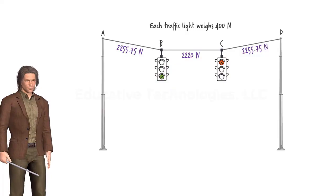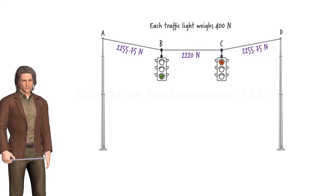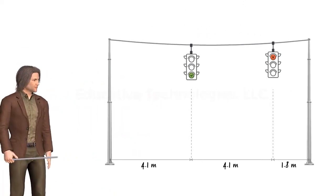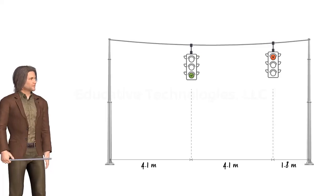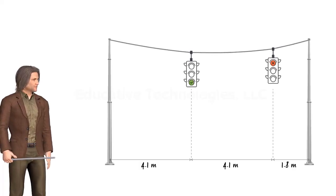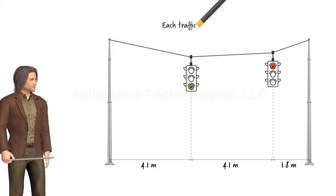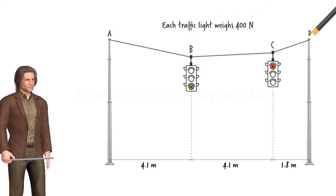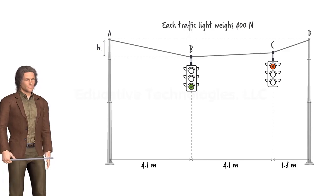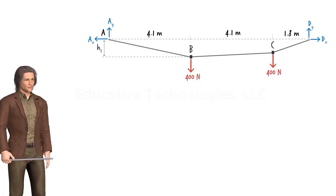This was a very simple example. Now let's consider a less trivial case. Suppose the right traffic light is positioned 1.8 meters from the right pole, which makes the loading on the cable unsymmetrical. This causes the cable to settle asymmetrically. Unlike the previous example, here we need to calculate AY or DY first in order to be able to analyze the cable.